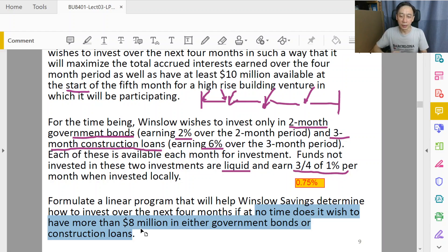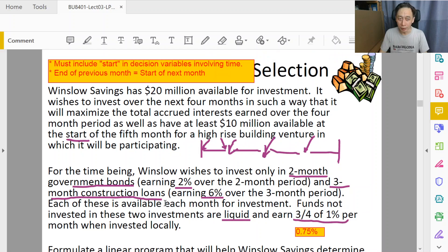Or it can be phrased as a resource limitation: limit your investment exposure to government bonds to no more than 8 million, construction loans to no more. So this part we know how to do it.